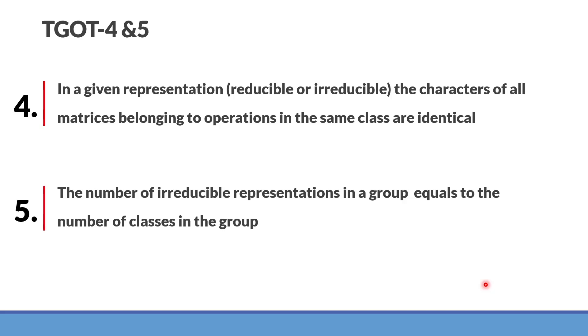This is the most important thing. How would you decide that a particular point group has these many numbers of irreducible representations? Of course, by just looking at the number of classes. Number of classes equals number of irreducible representations of that particular point group.